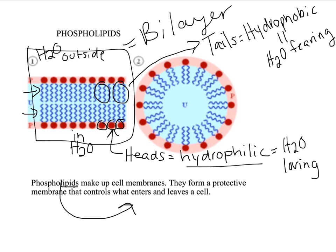They always orient themselves in this way automatically, forming this bilayer of phospholipids. You need to know what hydrophilic is, what hydrophobic is, and which part of the phospholipid is hydrophobic and which part is hydrophilic.